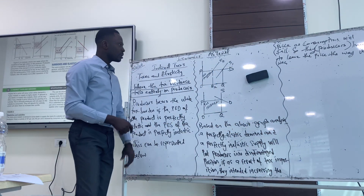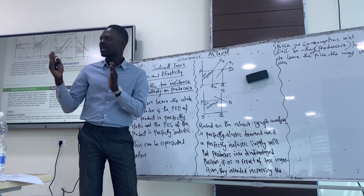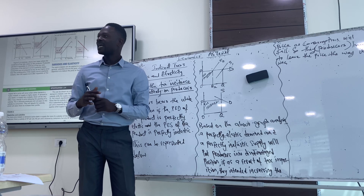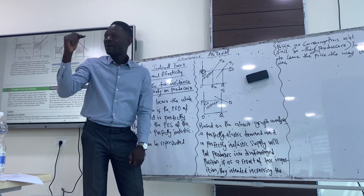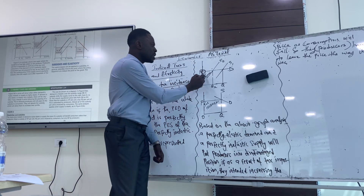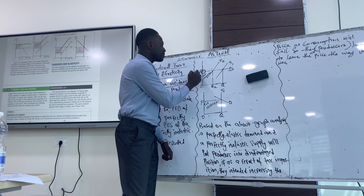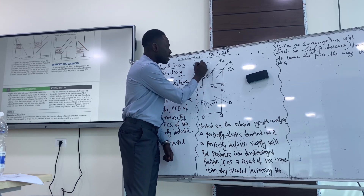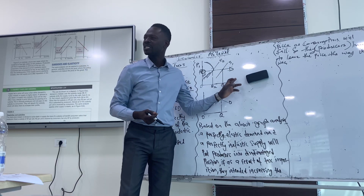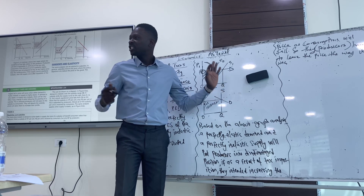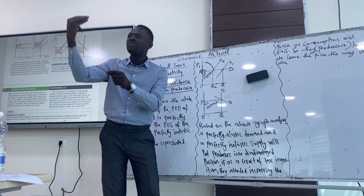So I'm going to use the graph to explain. For perfectly elastic demand, whatever the price is, we cannot change the quantity supplied. As a result of that, we cannot increase the price. So whatever price we charge, tax revenue will be paid by producers. When the tax burden is on consumers, we can increase the price from P to P1 and the tax revenue comes there. But because we cannot increase the price — since the demand for the product is perfectly elastic — the price will continue to remain the same. So whatever the tax increment is, it will be paid by producers.